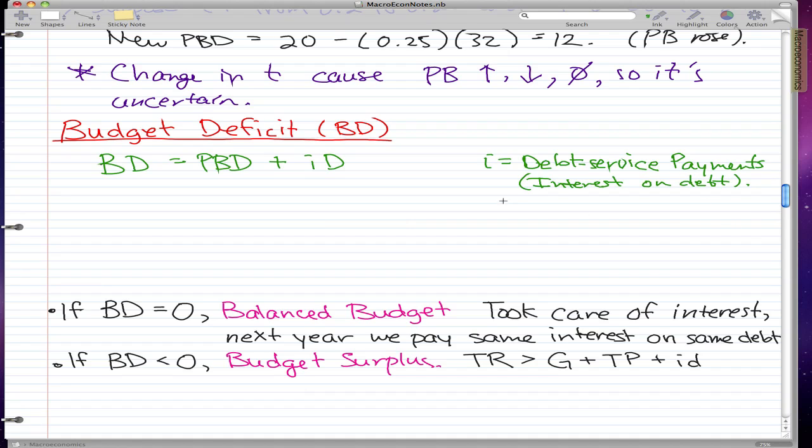D is our public debt, or we can call it our government debt.